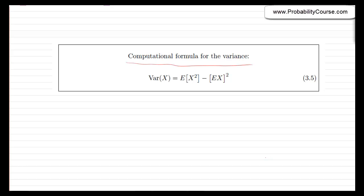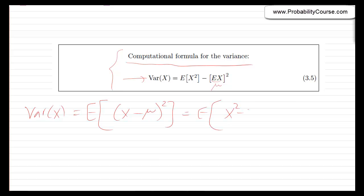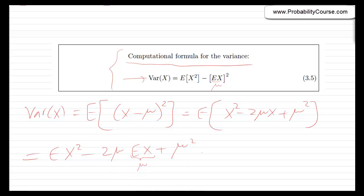There is one useful formula for calculating variance: Var(x) = E[x²] − μ². This is equivalent to the definition. Proof: Var(x) = E[(x − μ)²] = E[x² − 2μx + μ²] = E[x²] − 2μ·E[x] + μ² = E[x²] − 2μ² + μ² = E[x²] − μ².